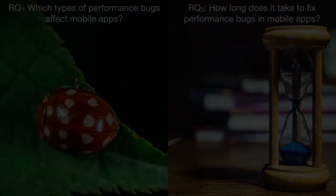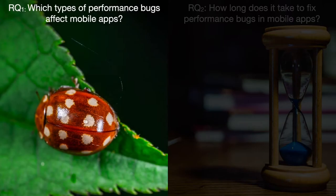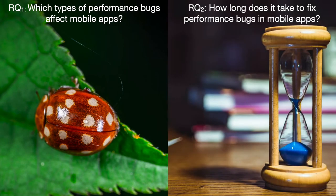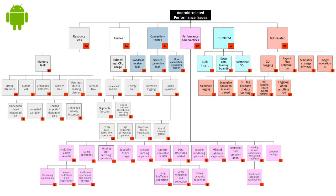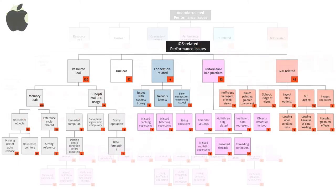We address our goal by answering two research questions. First, we explore the types of performance bugs affecting mobile apps, and second, we investigate how long it takes to fix these bugs. Concerning our first research question, we answer it by creating a detailed taxonomy of performance bugs affecting both platforms, Android and iOS.